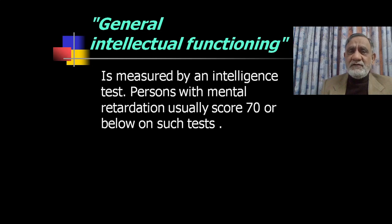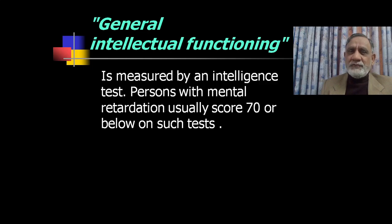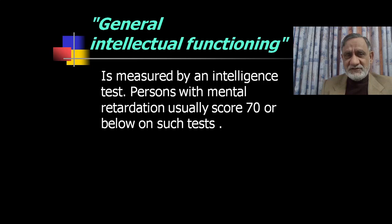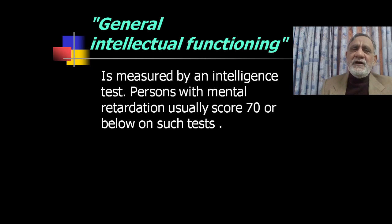General intellectual functioning is measured by an intelligence test. Persons with mental retardation usually score 70 or below on such tests. So intellectual functioning is measured by IQ level — if the IQ level is below 70, the person is considered mentally retarded. Previously, these children were called 'mentally retarded'; now they are called 'intellectually disabled.' The term mental retardation has been replaced by intellectual disabilities.